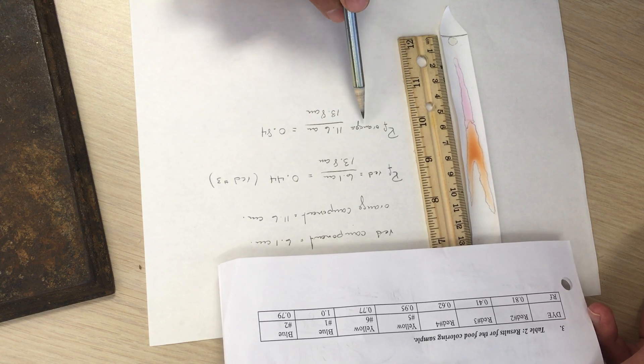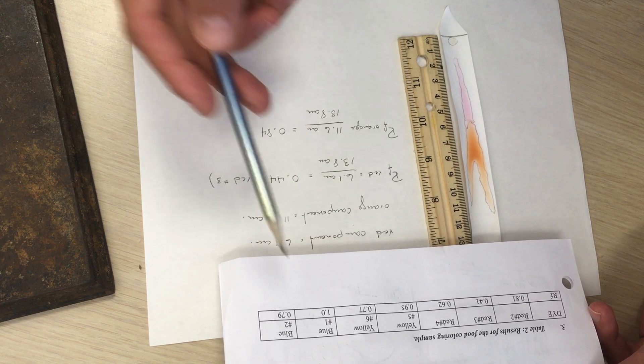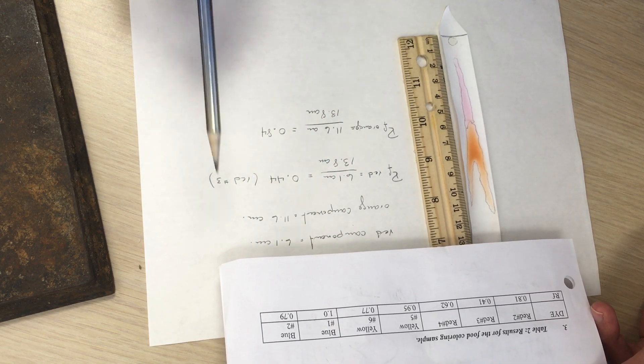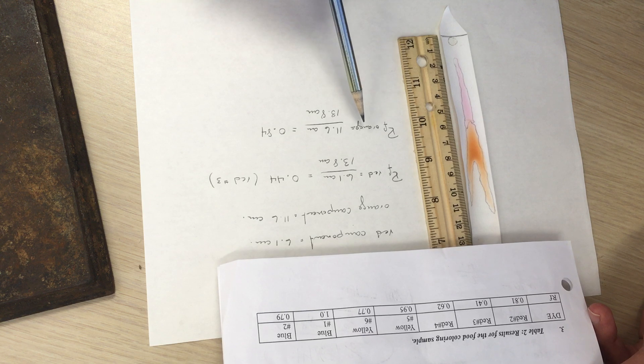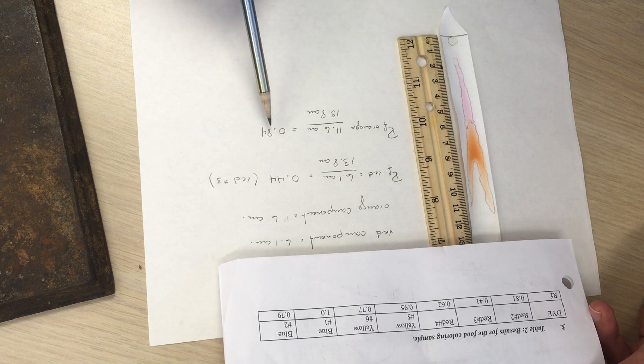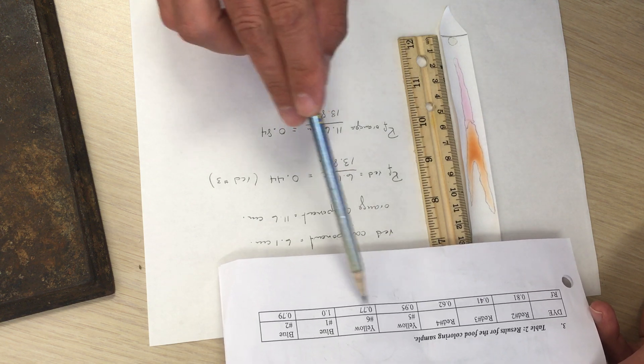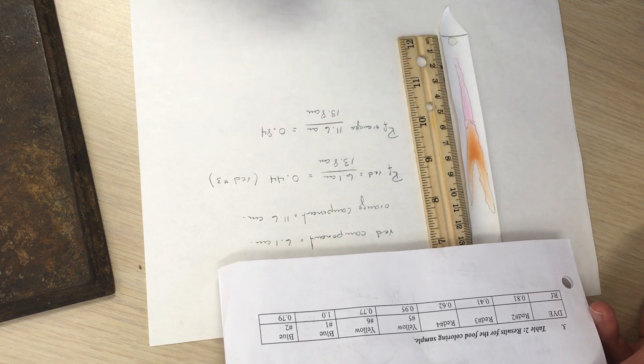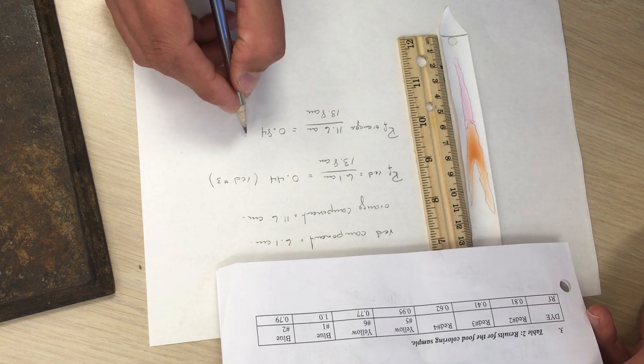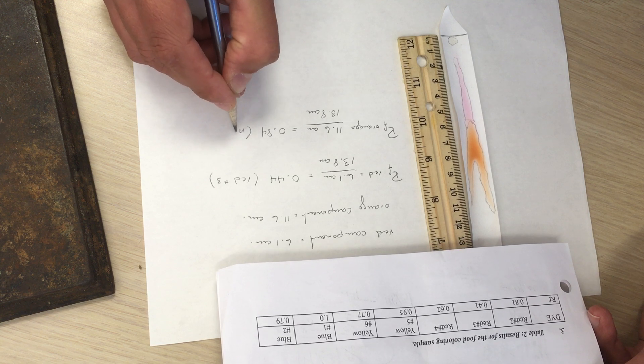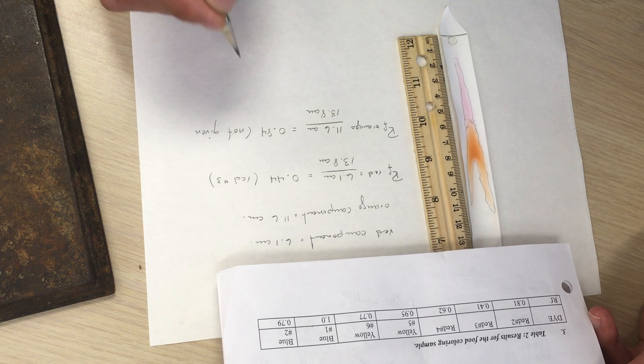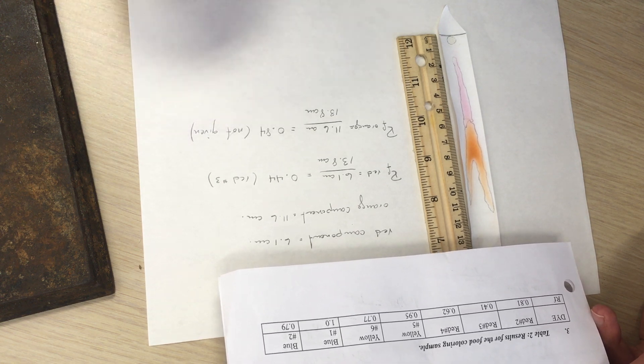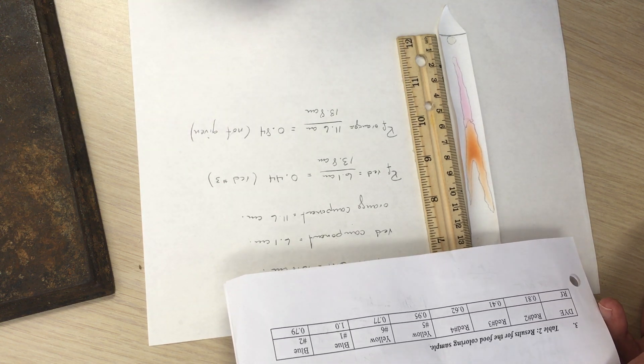And for the orange, well there's no orange color in the given list. We could assume that maybe it's a shade of yellow. And really 0.84 is not near the yellow number six or the yellow number five. So this is not a given choice of food coloring.